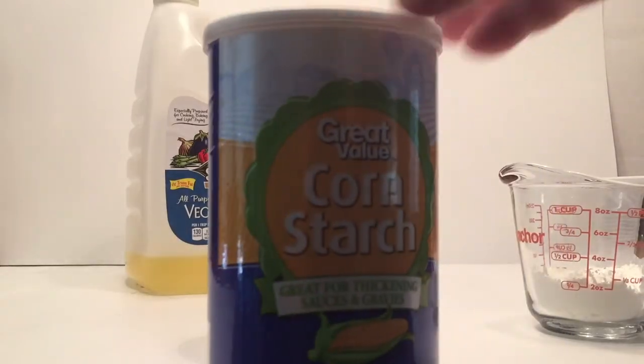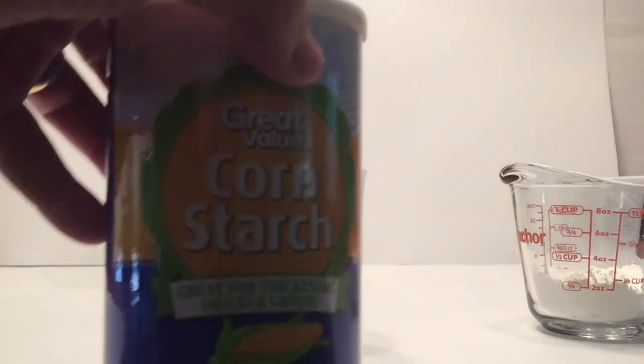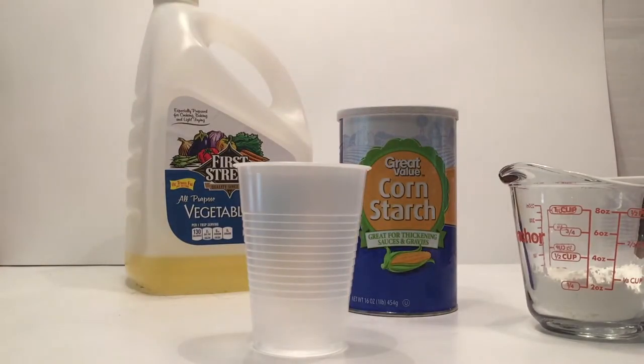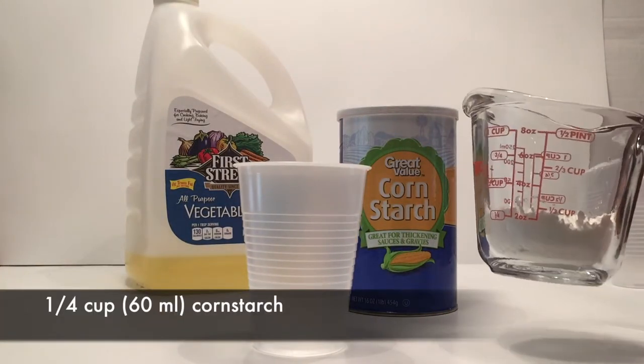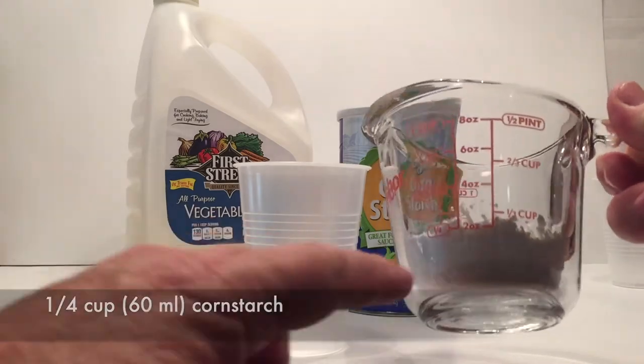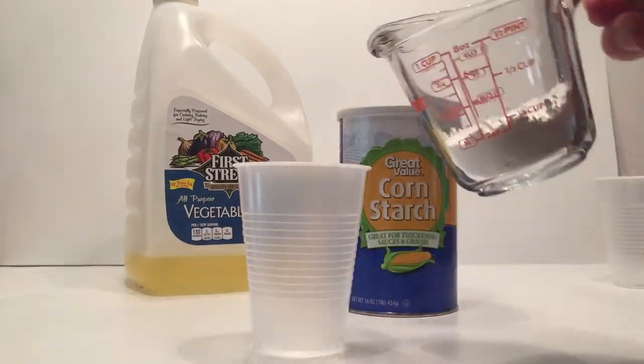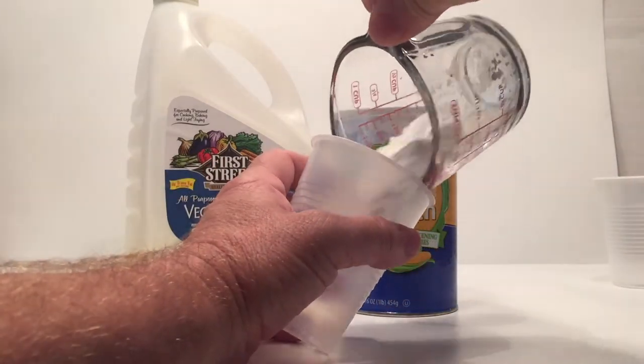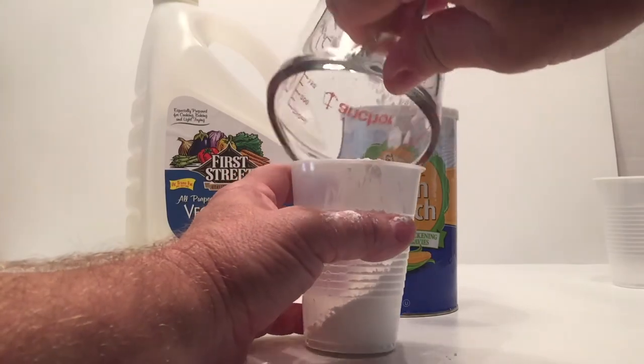To set up this experiment, you're going to take your cornstarch and put a quarter cup of cornstarch into the plastic cup. That is about 60 milliliters. So go ahead and put that into the cup and try not to make a mess.